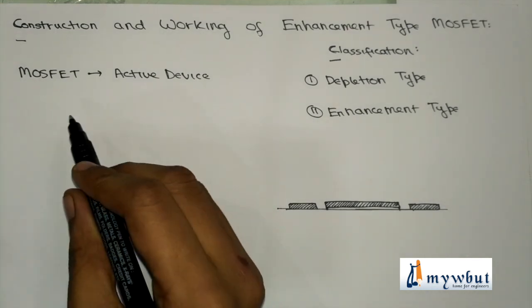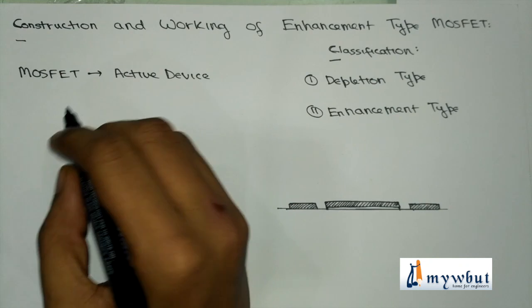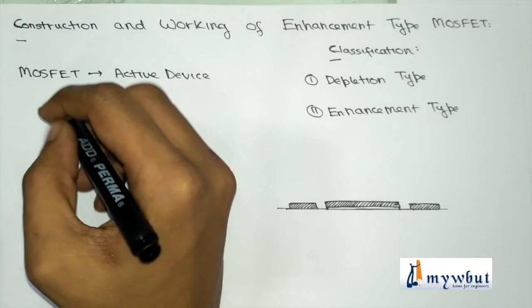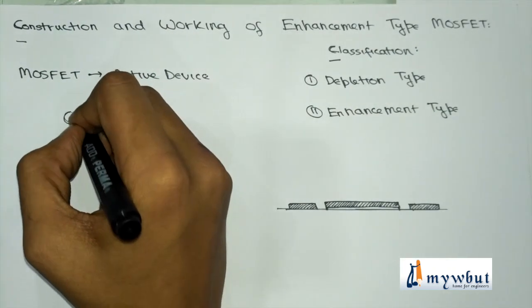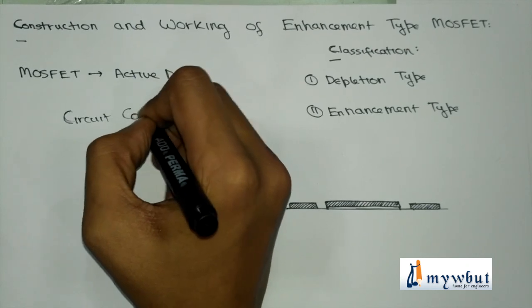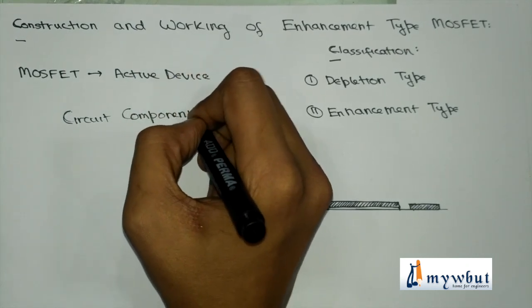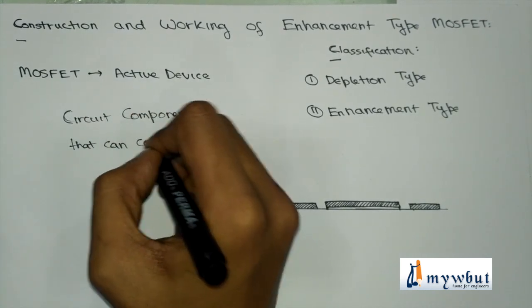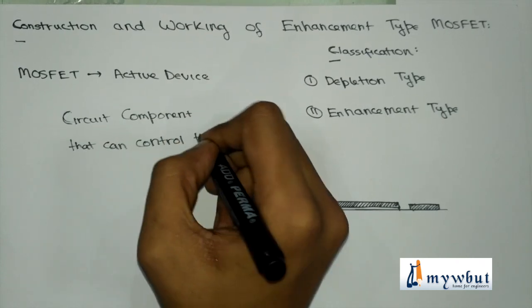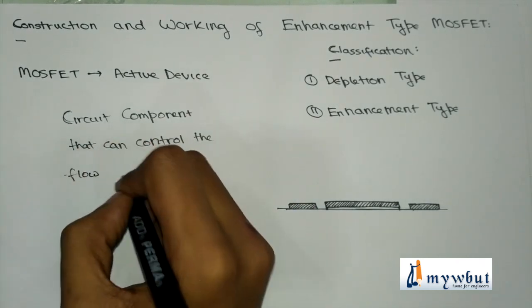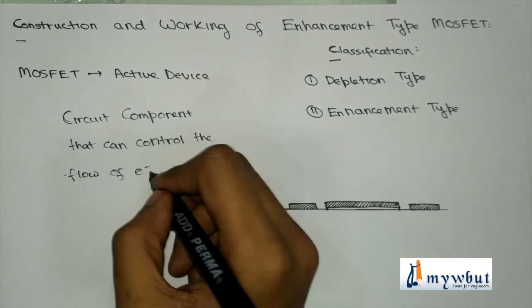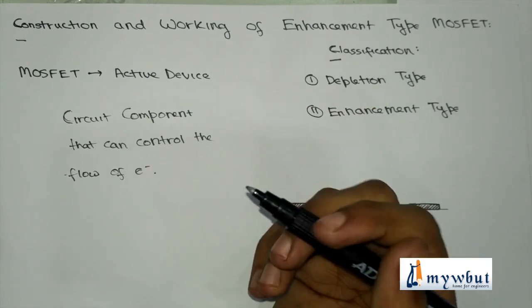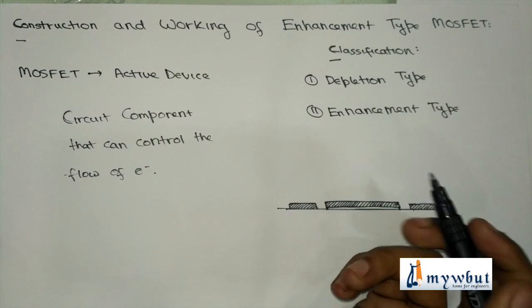So what is a MOSFET? MOSFET is an active device. An active device is a circuit component that can control the flow of electrons in a circuit. Circuit components that cannot control the flow of electrons in a circuit are passive devices.